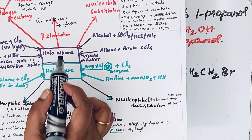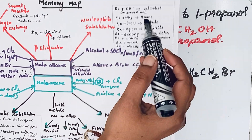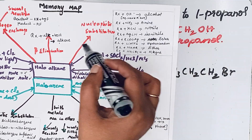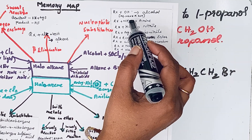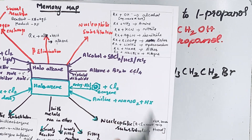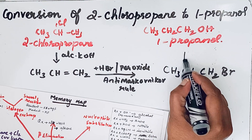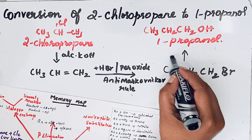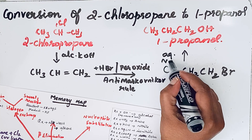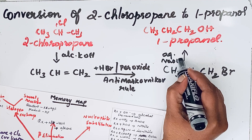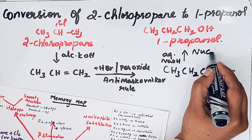This primary haloalkane (1-bromopropane) can be converted into alcohol by nucleophilic substitution using aqueous NaOH or KOH, giving us 1-propanol.